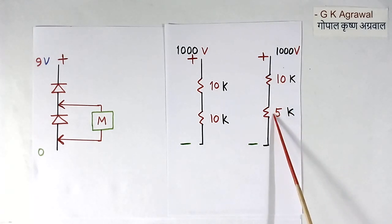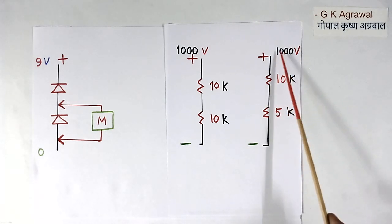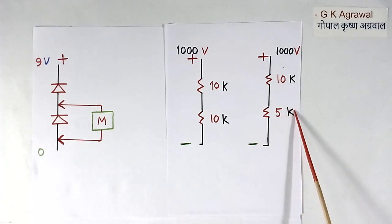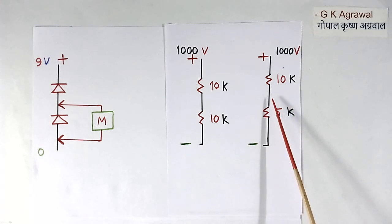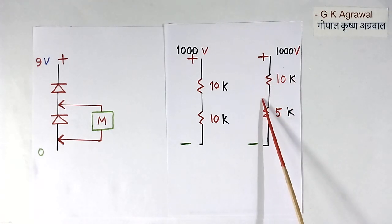But if these 2 resistors are not equal, one is small, one is bigger. Say this one is 5K, another one is 10K. Then voltage will not divide equally. The resistor with less value will have less voltage, and resistor with more value will have more voltage.